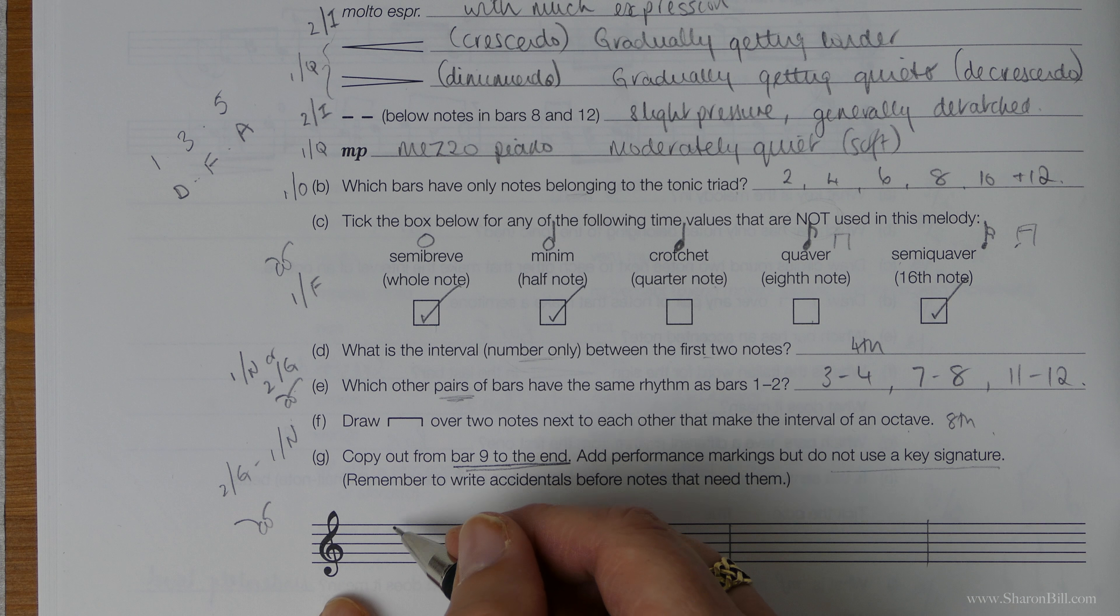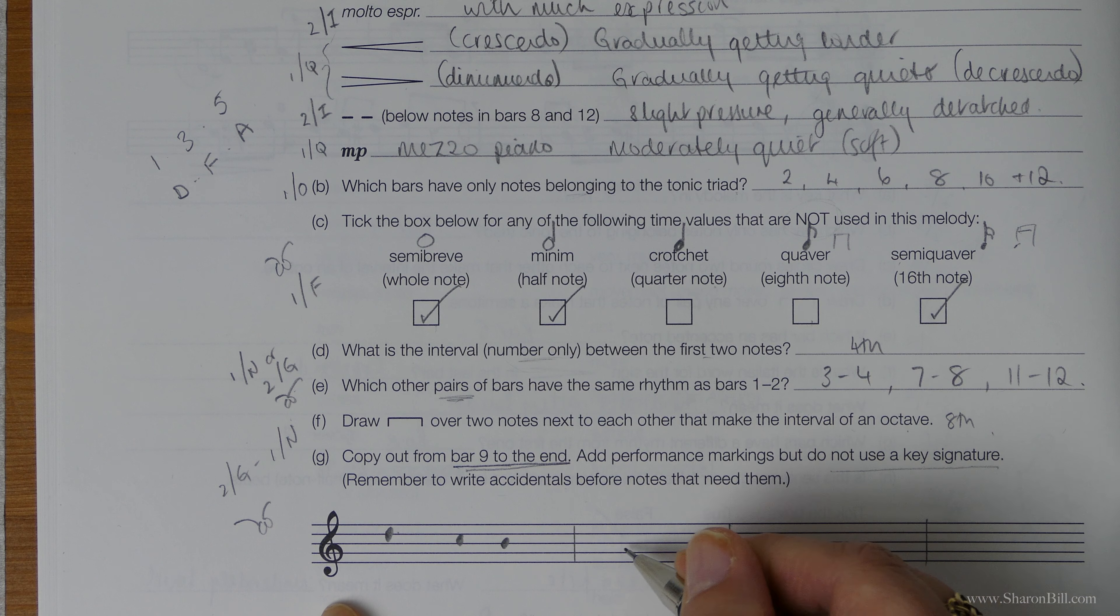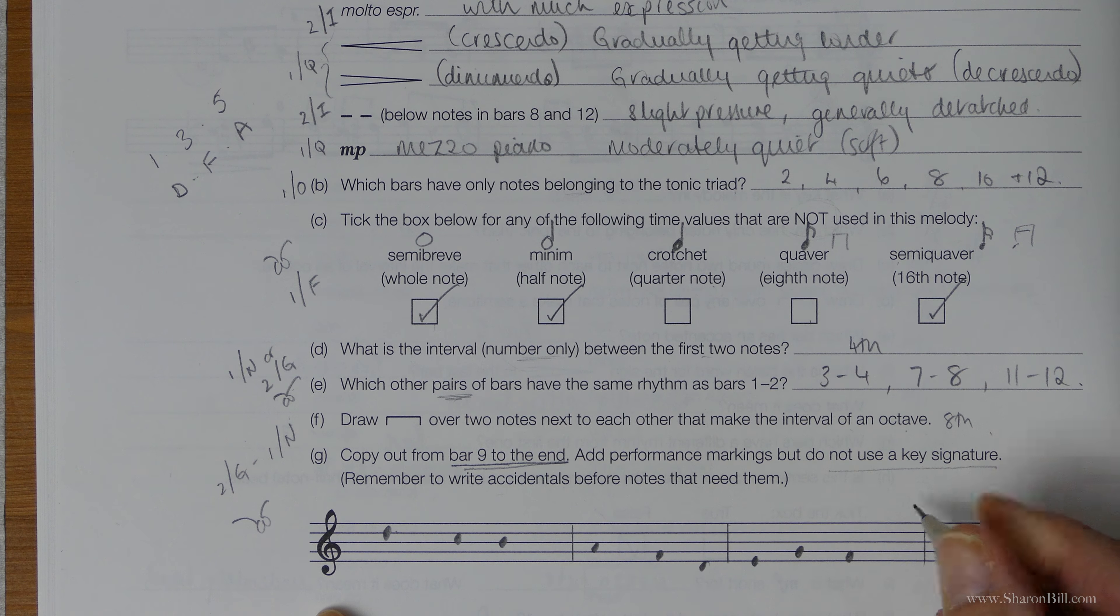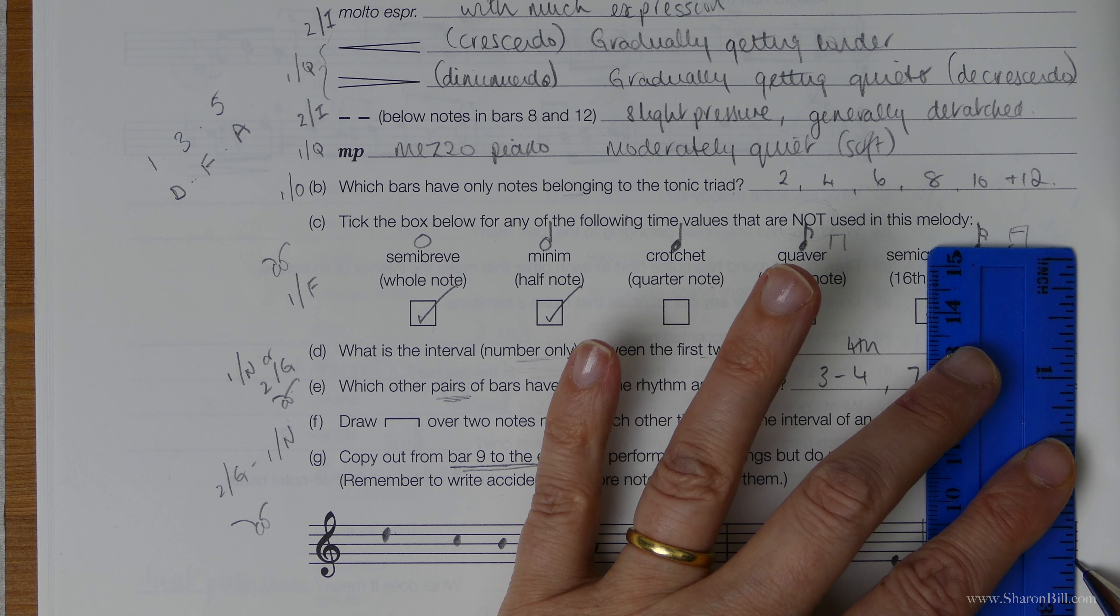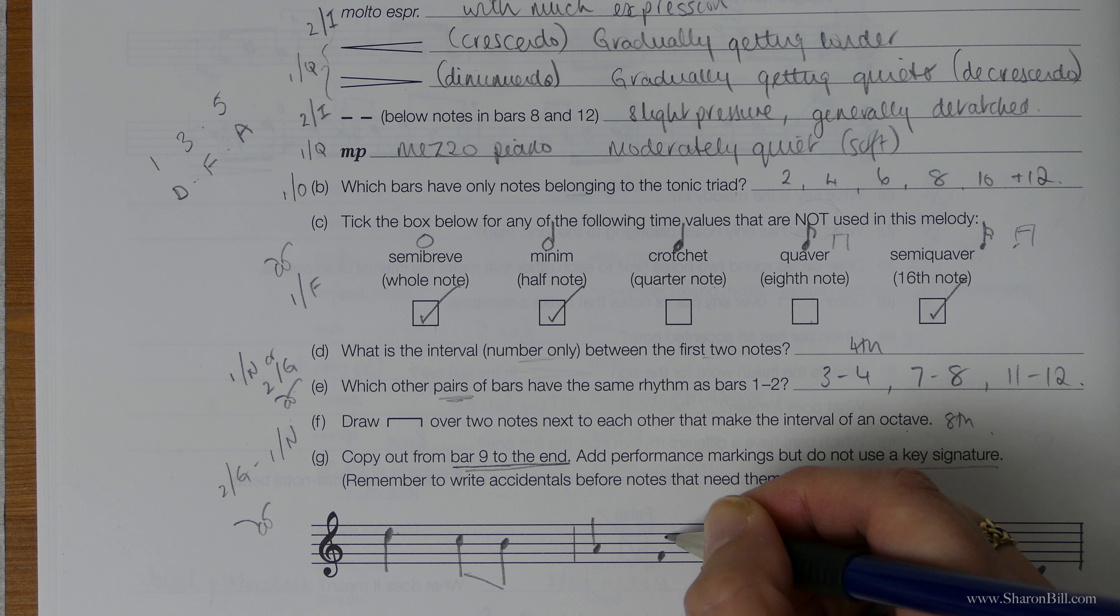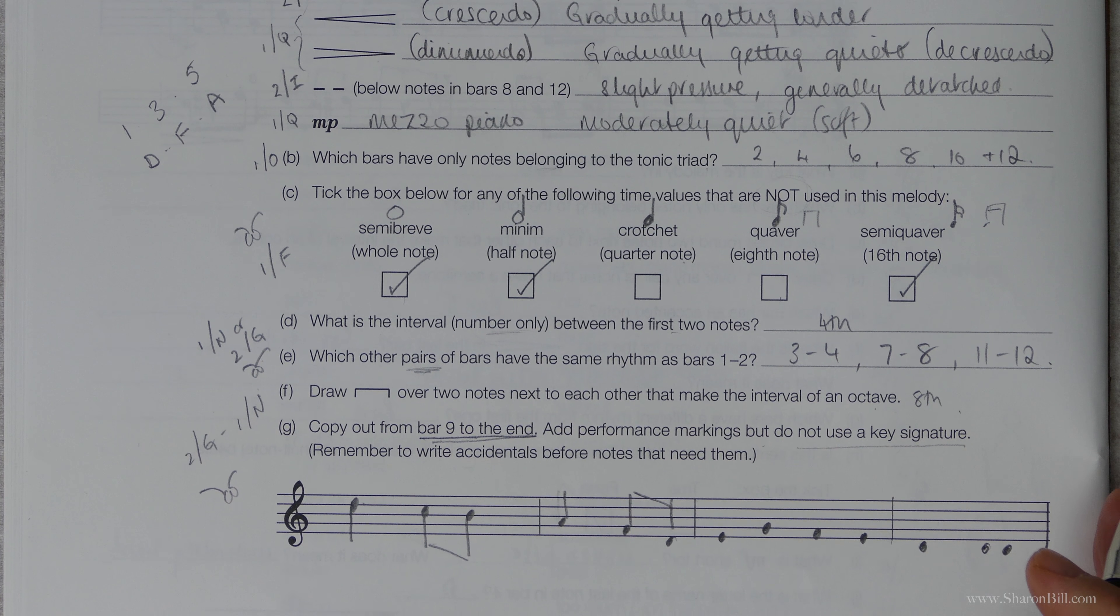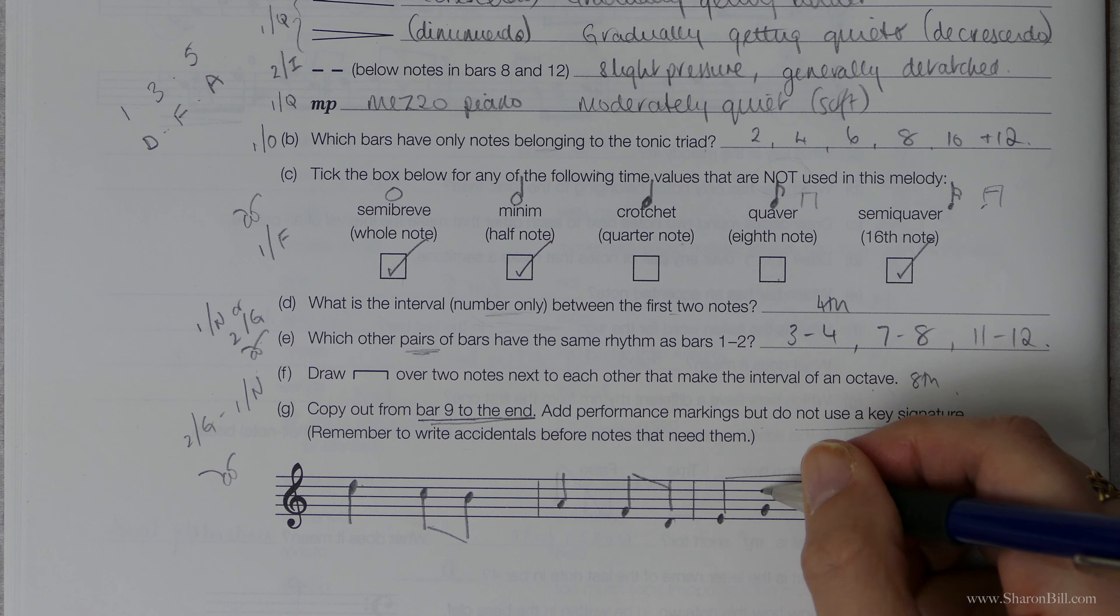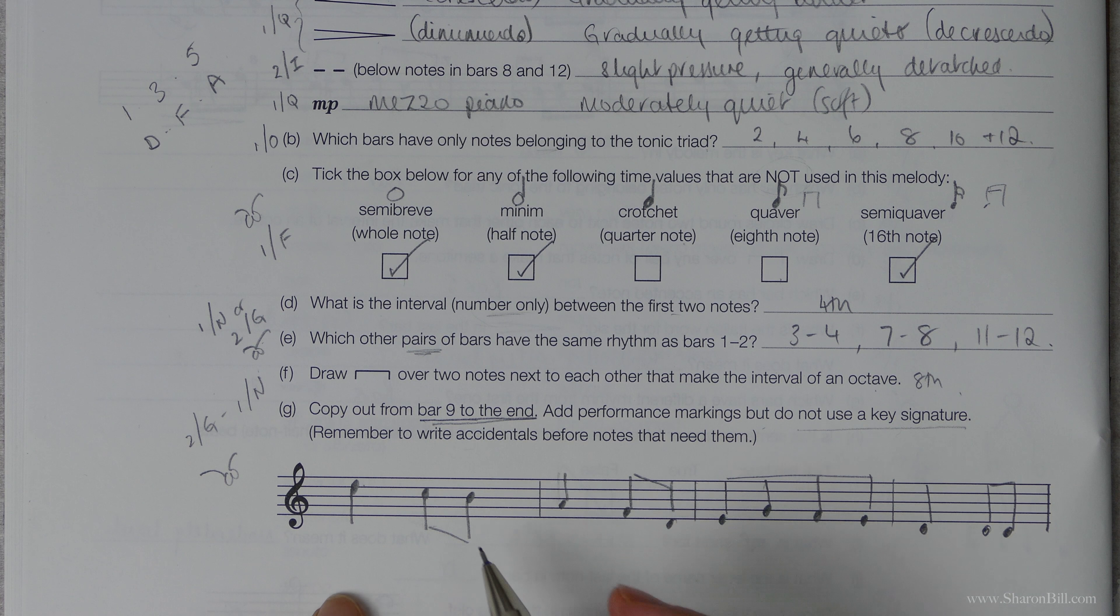Add performance markings but do not use a key signature. We're only going from bar 9 and so we're starting in the middle of a line. It says write accidentals before the notes that we need to, so instead of having the key signature we're going to have to add it next to the notes as they come along. So let's just get the notes in place. So we've got D, C, B, A, F, D, E, G, F, E, D, D, D, D. And don't forget, oh don't lose marks by now missing your last bar line. There we go. Let's get the stems in place so we're just copying this. Shall I just position that a bit more carefully? And then all of these will be joined together because we're beginning and ending at the same point, it's just a straight line at the top.